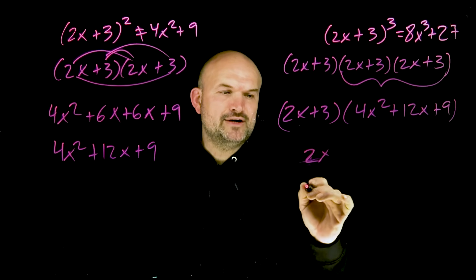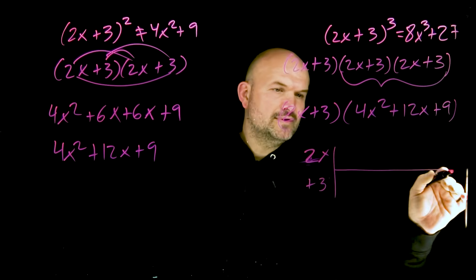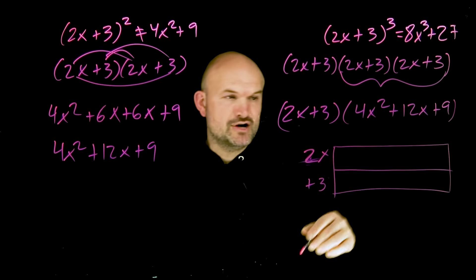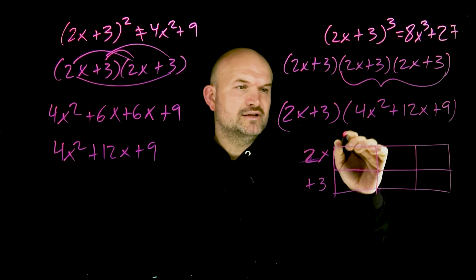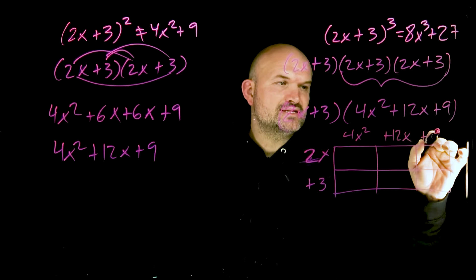What I'm going to do is take one binomial and put it along the side of a rectangle. Then for the other expression, in this case a trinomial, I'm going to create three columns. So this will represent the 4x squared plus 12x plus the 9.